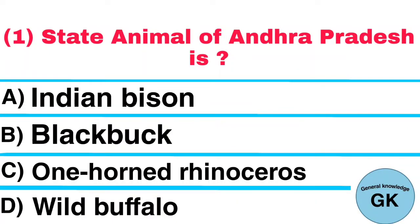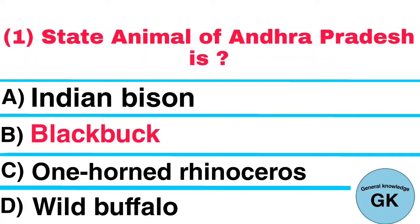Question Number 1. State Animal of Andhra Pradesh is: A. Indian Bison, B. Black Buck, C. One Horned Rhinoceros, D. Wild Buffalo. Answer: Black Buck.